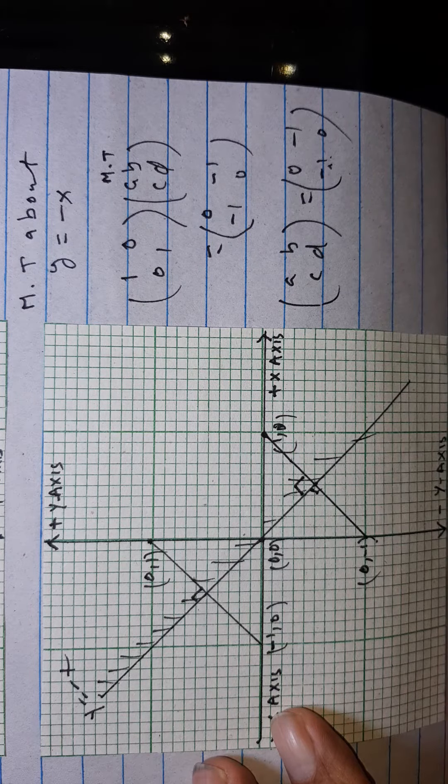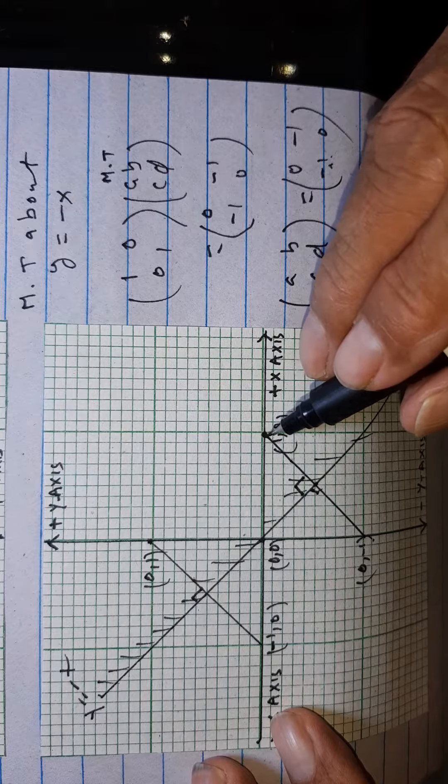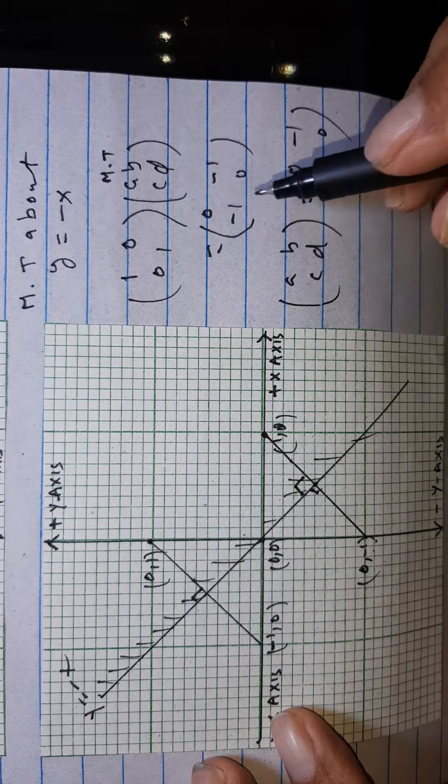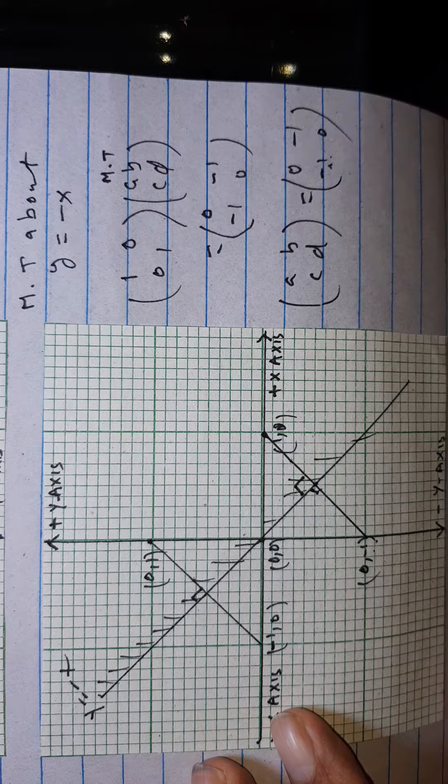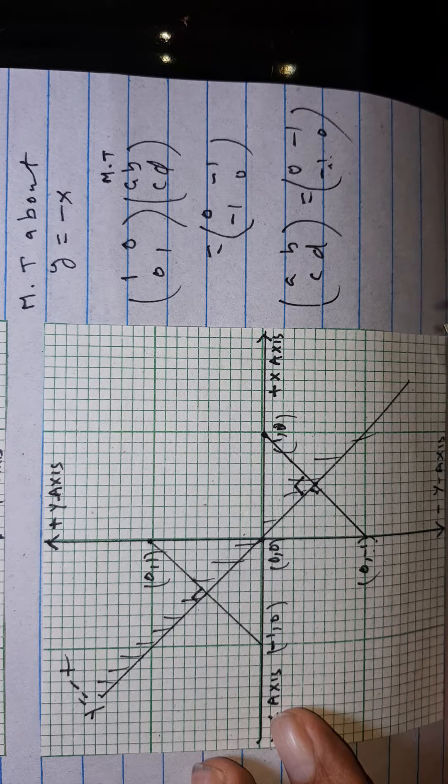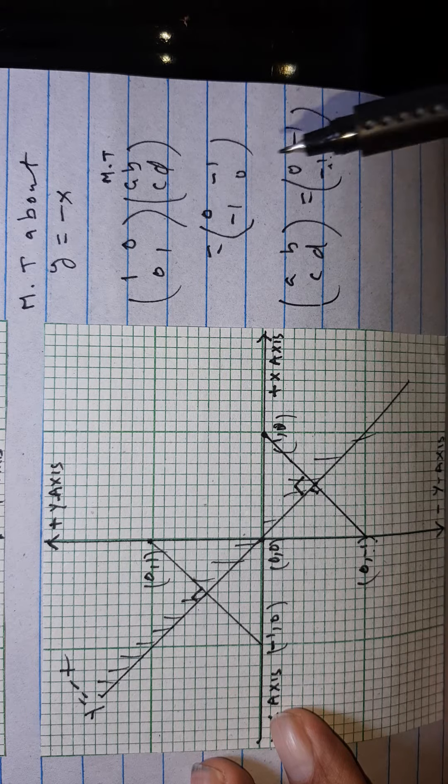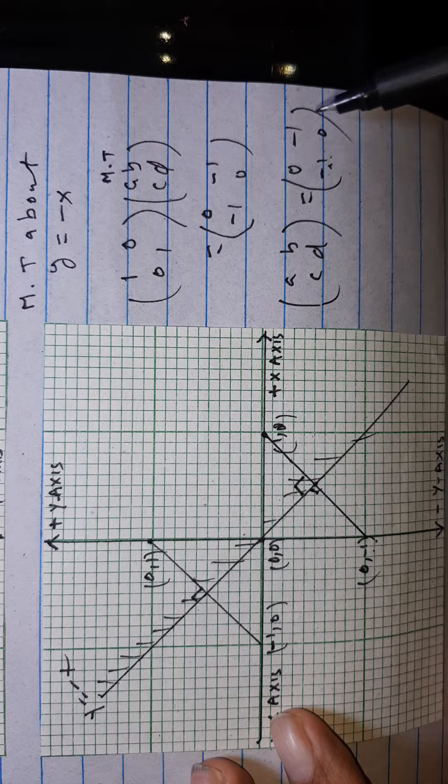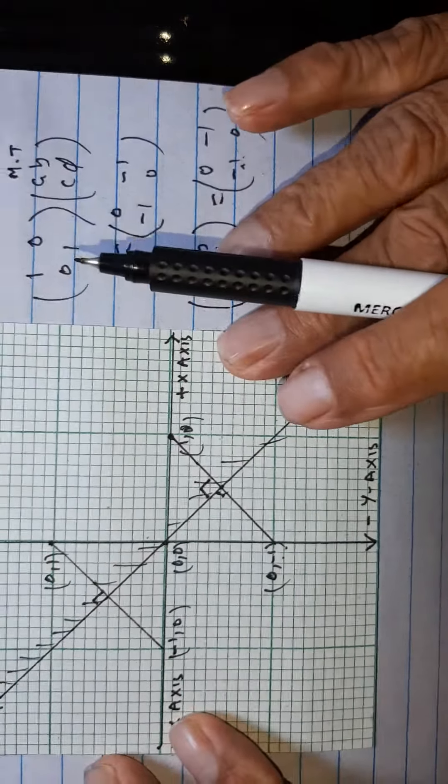About y equal to minus x, 0 minus 1, minus 1 0. And here the matrix of transformation will be about y equal to minus x: 0 minus 1, minus 1 0.